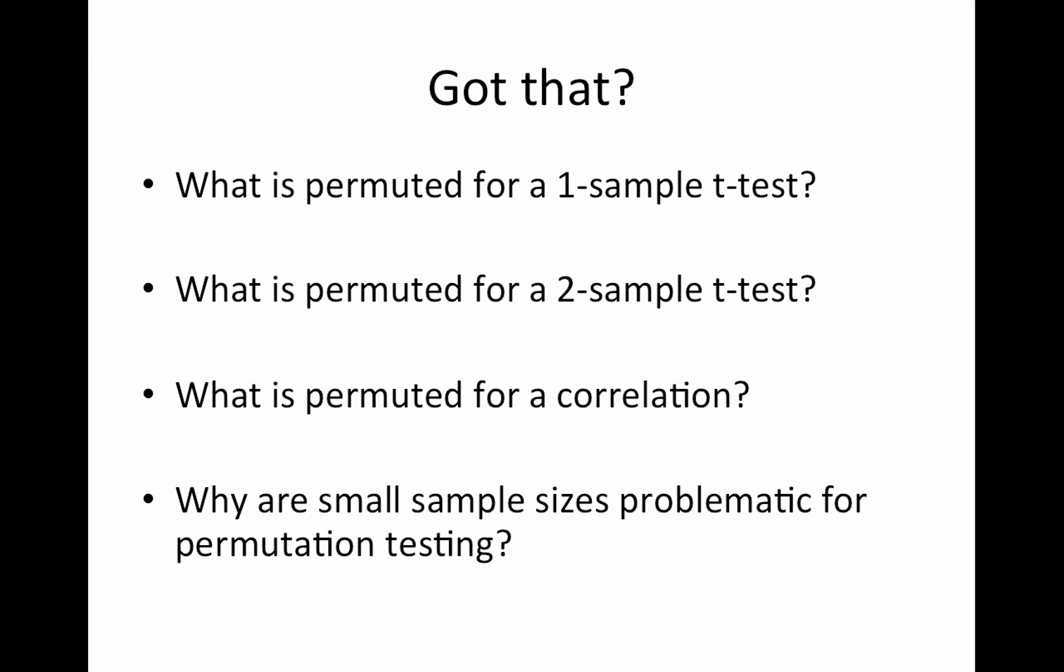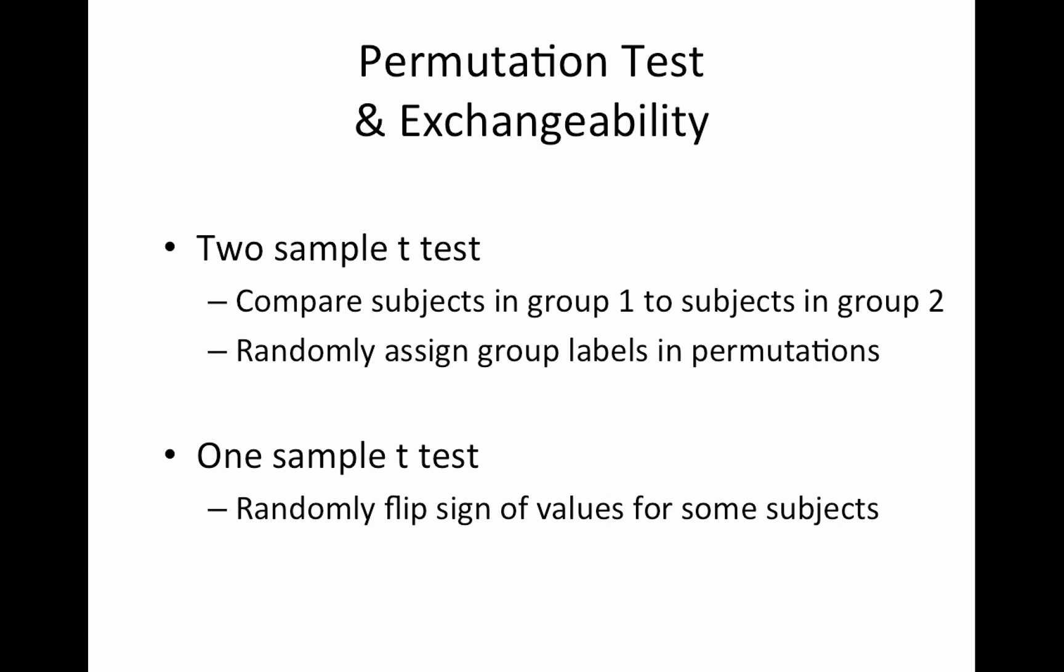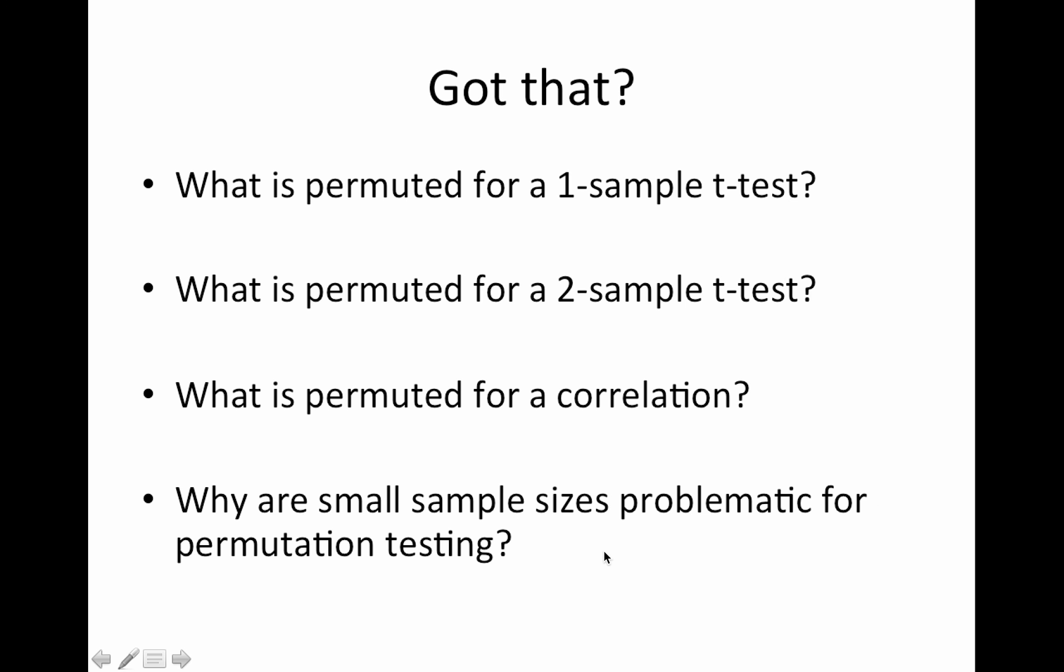Have all that? What is permuted for a one sample t-test? Make sure you know that. What is permuted for a two sample t-test? Oh, by the way, I think I said paired t-test. I meant one sample t-test here. Same difference. What's permuted for a two sample t-test? And what's permuted for a correlation? I didn't actually talk about that, but see if you can puzzle it out. And why are small sample sizes problematic for permutation testing? I think randomize kind of spits out a warning if you're too small. Or actually you'll know, it'll tell you that it only had like five permutations possible. Then you know you're in trouble.